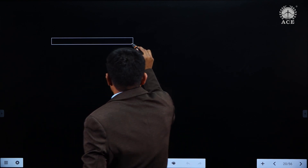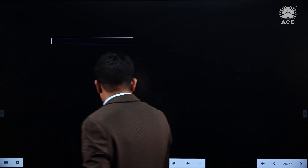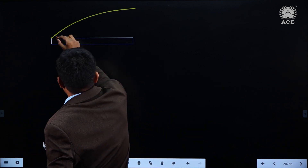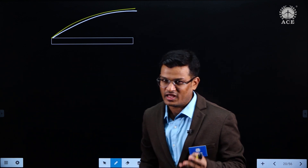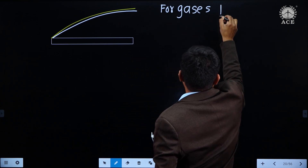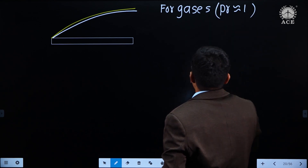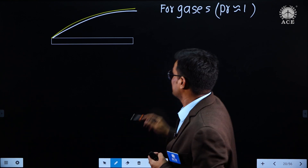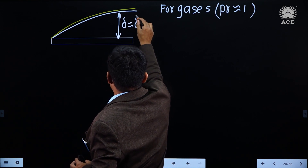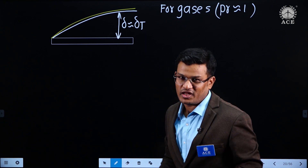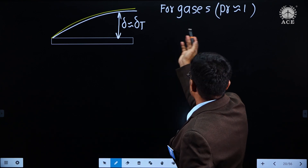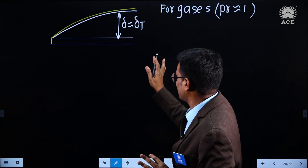Let us say this is the plate, and there is a boundary layer — that may be hydrodynamic boundary layer or thermal boundary layer. For gases, the order of magnitude of Prandtl number is 1. Prandtl number equal to 1 means delta is almost equal to delta T, where delta is hydrodynamic boundary layer thickness and delta T is thermal boundary layer thickness. This is almost the same for gases.